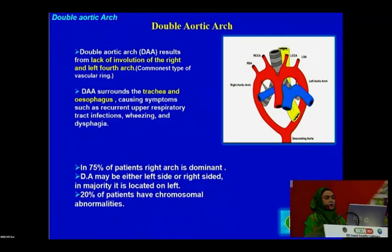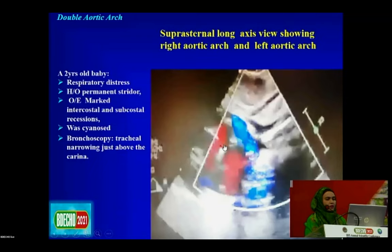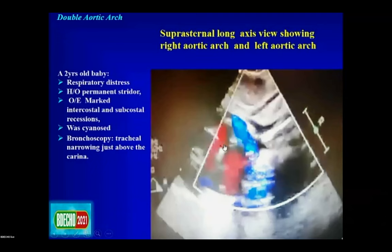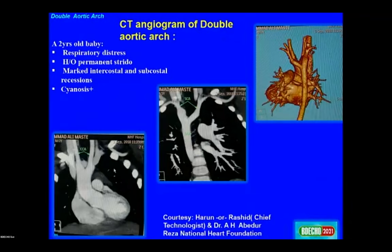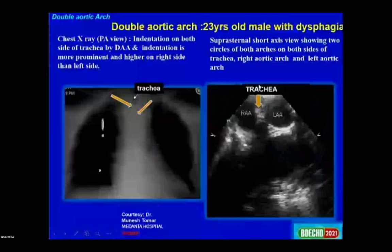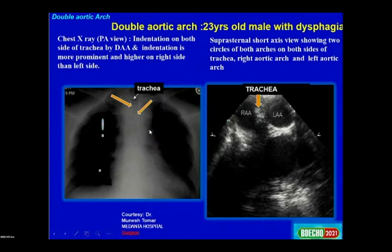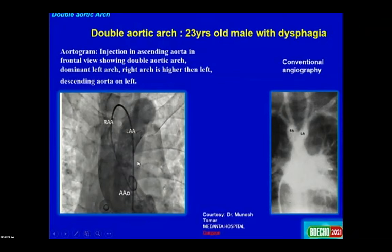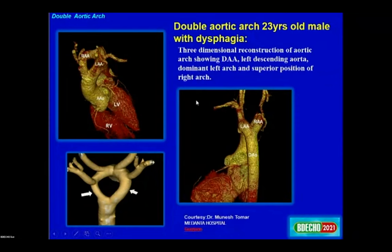Double aortic arch results from lack of involution of both right and left arches, forming a ring around the trachea and esophagus. A suprasternal long-axis view in a two-year-old with respiratory distress shows both right and left aortic arches. CT and MRI confirm the double aortic arch. In a 23-year-old male with dysphagia, chest X-ray shows indentation on both sides of the trachea, and suprasternal short-axis shows two circles on both sides. 3D reconstruction also demonstrates the double aortic arch.